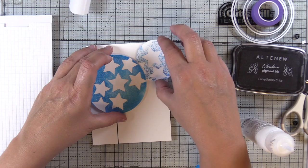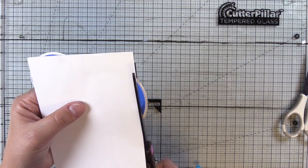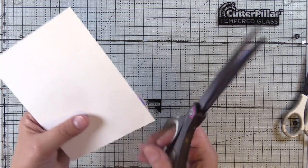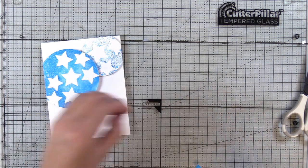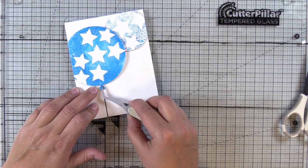I put a block on them until they were dry, then I flipped it over, trimmed the excess from the back, and then I'll go ahead and pop up the balloon end with a foam square.